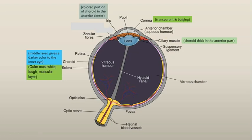Then we have the iris, which is the colored portion of your eye. The eye can be green, blue, gray, brown, or black. The colored part you see in the eye is basically the iris, and this iris is part of the choroid layer.